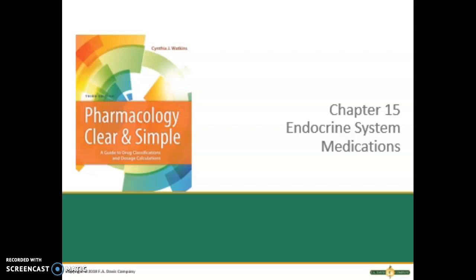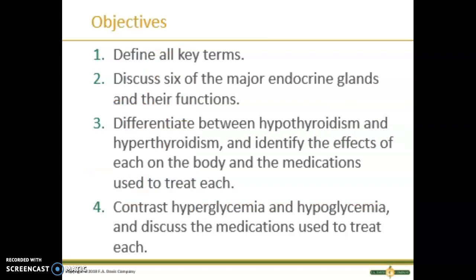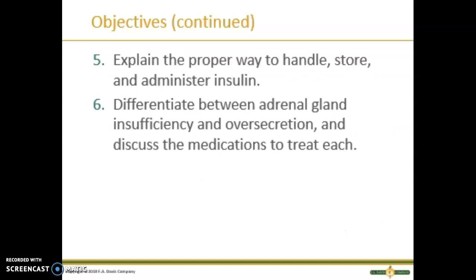Hello and welcome to your Pharmacology Clear and Simple Chapter 15 Endocrine System Medications Lecture for Module 15. Our objectives are: define all key terms; discuss six of the major endocrine glands and their functions; differentiate between hypothyroidism and hyperthyroidism and identify the effects of each on the body and the medications used to treat each; contrast hyperglycemia and hypoglycemia and discuss the medications used to treat each; explain the proper way to handle, store, and administer insulin; and differentiate between adrenal gland insufficiencies and over-secretion and discuss the medications to treat each.